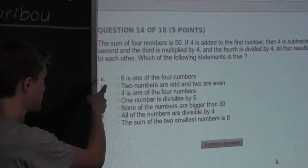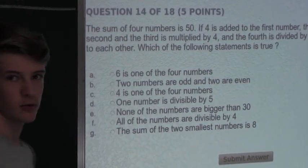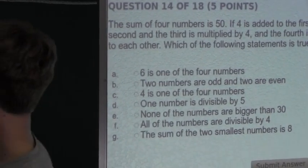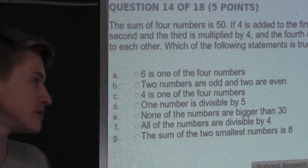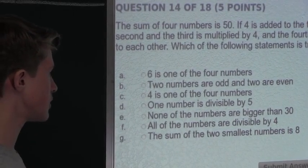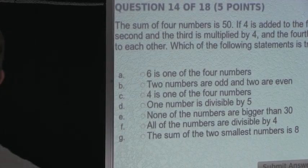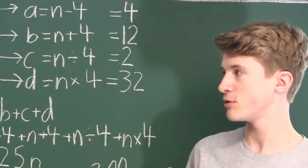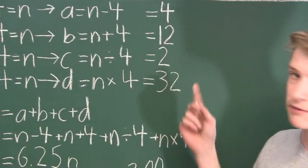Option A says six is one of the four numbers. We know this is false because the four numbers are four, twelve, two, and thirty-two. B says two numbers are odd and two are even. Well, this is false because four, twelve, two, and thirty-two are all even numbers.